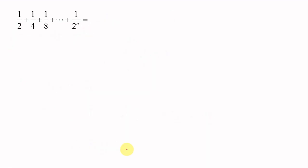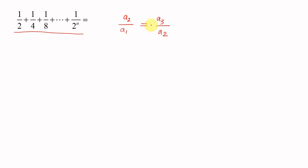Now we move to the next question: 1/2 plus 1/4 plus 1/8 plus etc. up to 1 over 2 raised to n. First, we check whether this is a geometric series. To do that, divide the second term by the first term to get A2 by A1, and divide the third term by the second term to get A3 by A2. If both ratios are equal, it is a geometric series; if not, it is not.